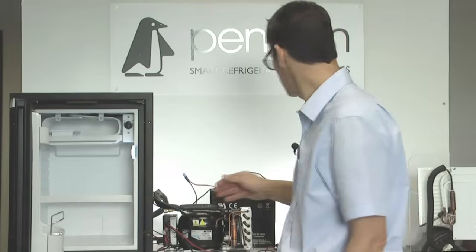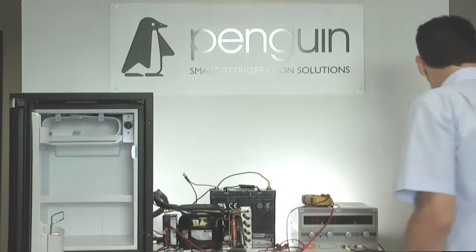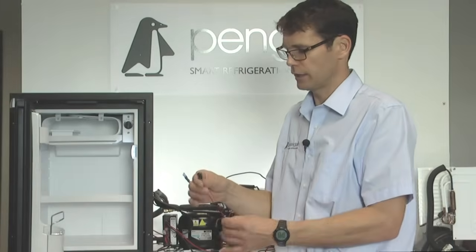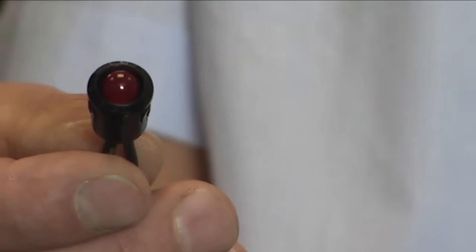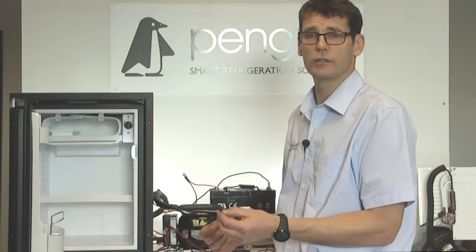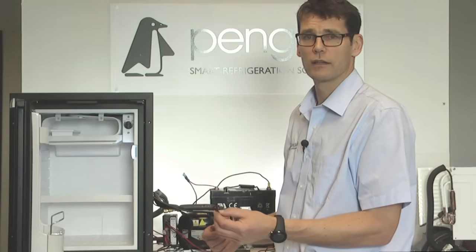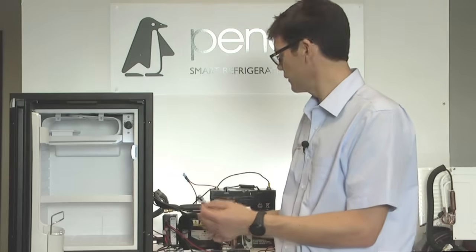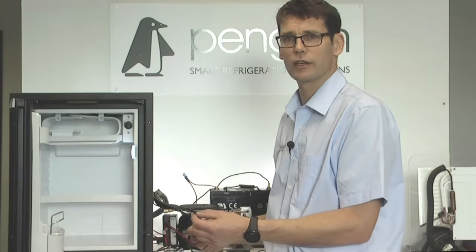The best way to do that is to use a simple 12 volt LED, something like the one I have here, which I can plug into the controller, and it will give me a fault code to tell me why the fridge isn't working. So if we plug this in, hopefully we can find out what's going on.